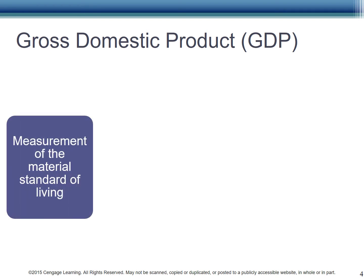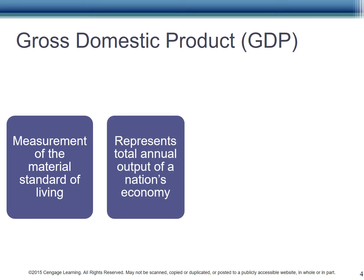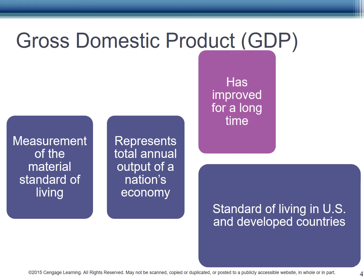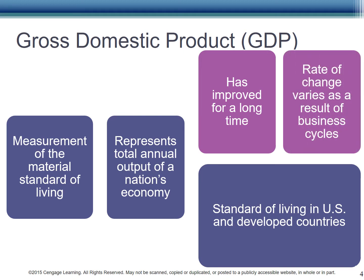Let's look more closely. GDP is a measurement of the material standard of living and represents the total annual output of a nation's economy. As the map showed, the U.S. and other developed countries are doing pretty good. Over the long term, the standard of living in the U.S. and other developed countries has improved, although the rate of change will ebb and flow as a result of natural business cycles.